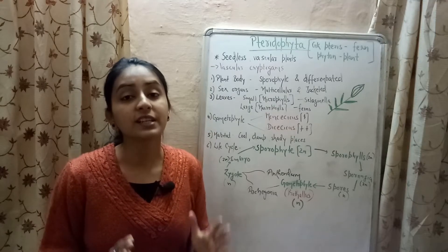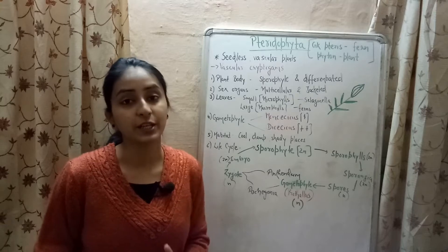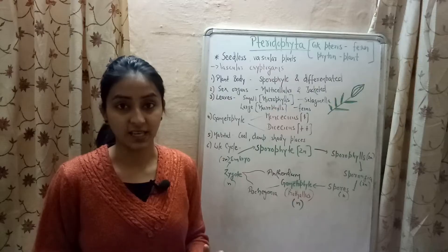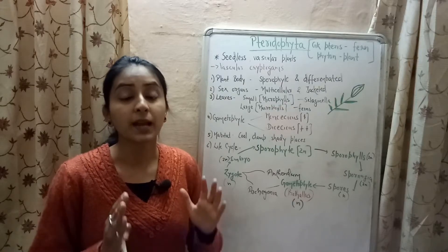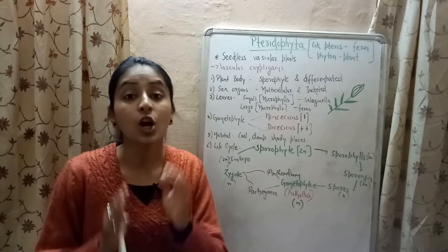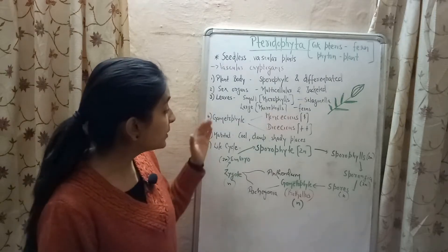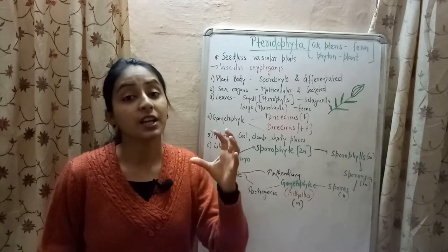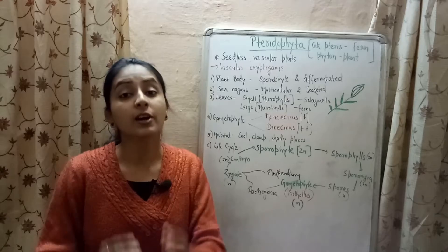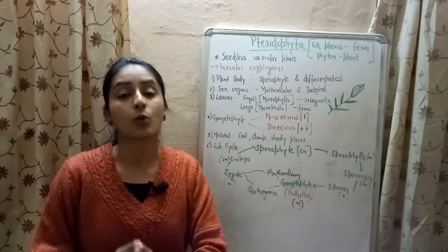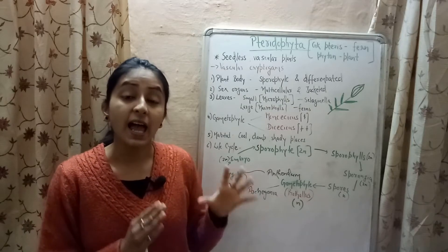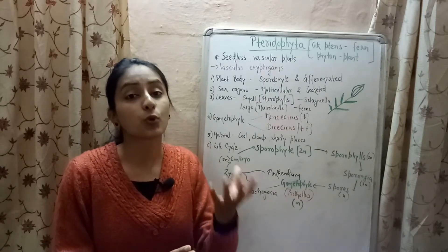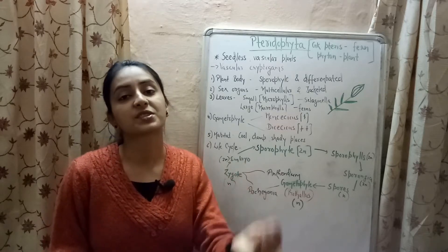The dominant stage in the life cycle of pteridophytes is the sporophytic stage, whereas the gametophytic stage — where the plant body contains a single set of chromosomes — is short-lived. In the gametophytic stage, the plant body has sex organs that produce sex cells. Fusion between sex cells forms a zygote, which develops into an embryo, and the embryo forms the sporophyte, which again produces spores and the cycle repeats.